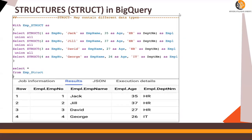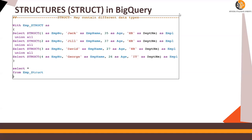In this video we are going to talk about structures in BigQuery. In the previous video we discussed about arrays — arrays are collections of elements of the same data type. Structures are collections of different data type fields. It's like a table, so this is again an example of a table within a table.